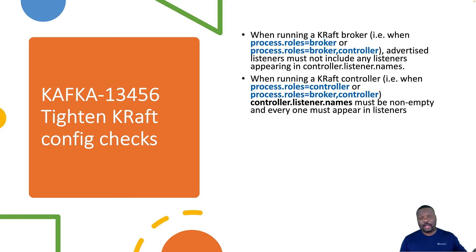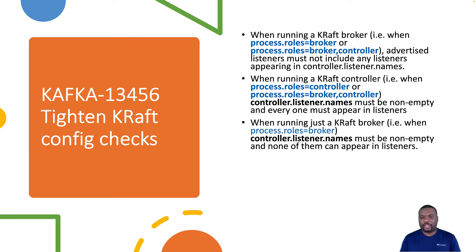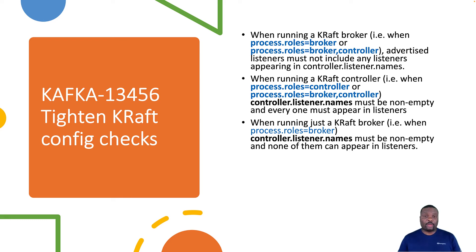If you're migrating from older Kafka versions into 3.1 or 3.2, pay attention to these rules so you don't have issues running your cluster. If your cluster is not starting properly, check the relevant Jira issue and make sure you're not violating any of the configuration constraints specified in this change. If running as a controller or in mixed/combined mode, controller.listener.names must be non-empty and all values there should also appear in the listeners configuration. When running as just a broker, controller.listener.names should also not be empty but none of its values should appear in the listeners.